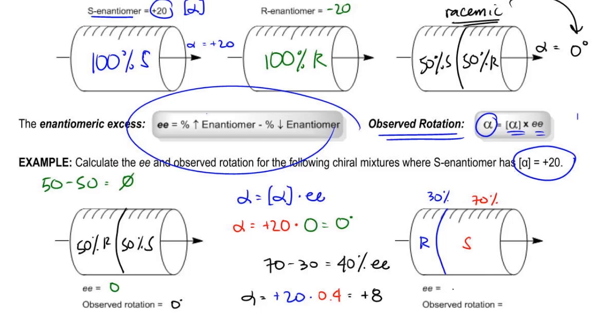So my enantiomeric excess here should have been 40% and my observed rotation instead of being positive 20 which is what it would be if it was 100, it's going to be positive 8.